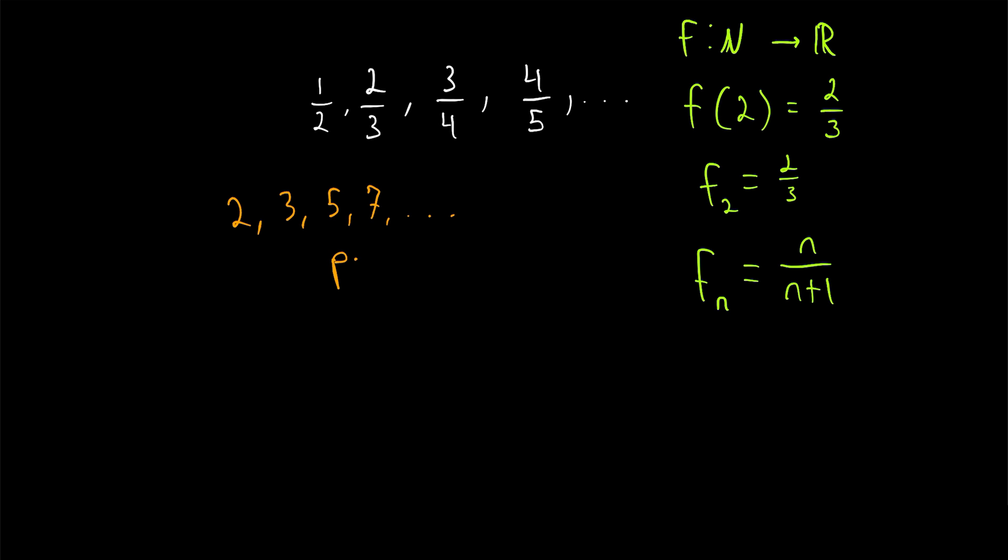Here's an example of a sequence that cannot be described with such a simple equation, the sequence of prime numbers. We don't have a closed form formula to calculate the nth prime number. Here's another popular example of a sequence that does have a formula for the nth term of the sequence, but it's a little more complicated than this. This is the Fibonacci sequence, so we'll call it big F.